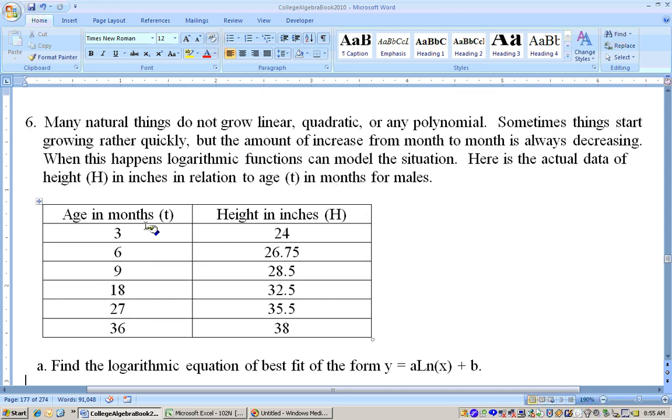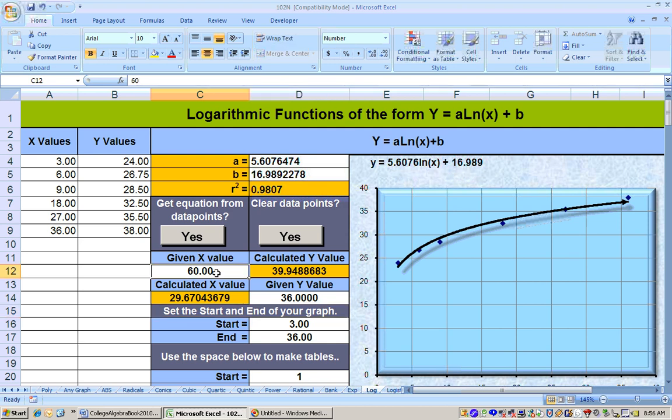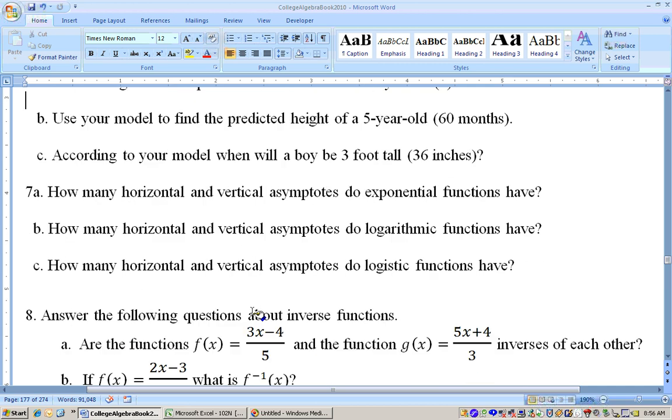On this problem, it's talking about the growth of a baby. And this is its height. And this is how old it is. And we want to get the logarithmic function of best fit. So, I copied this data and pasted it special as text into the logarithmic sheet. I click this button and I get the logarithmic equation of best fit. So, there it is. Now, part B says, how tall will the baby be when it's 60 months old? So, just type in 60 for the X. And you get the answer right here, 39.94. When will the baby have a height of 36 inches is what part C says. And so, I type 36 in here and I get when he is 29.67 months old.